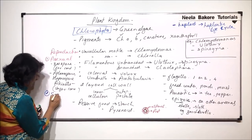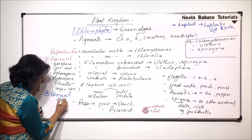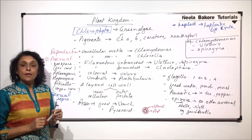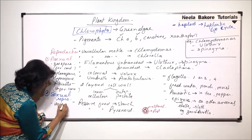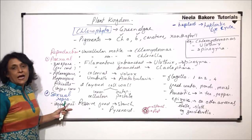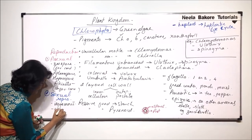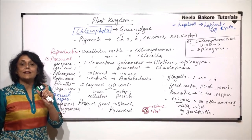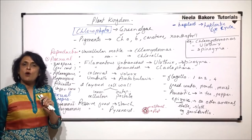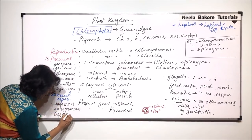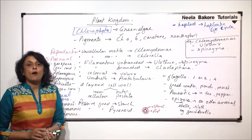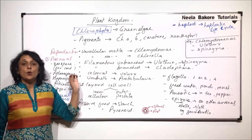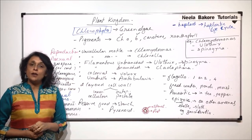In sexual reproduction, haploid gametes fuse. If these gametes are exactly the same, then it is isogamous. If the gametes are different in shape and size, then it is anisogamous. The third type is where the female gamete — the egg — remains stationary, the male gamete is smaller and motile, and this is known as oogamous. All these types of reproduction are seen in green algae, and when we study each example we will discuss which type applies to which alga.